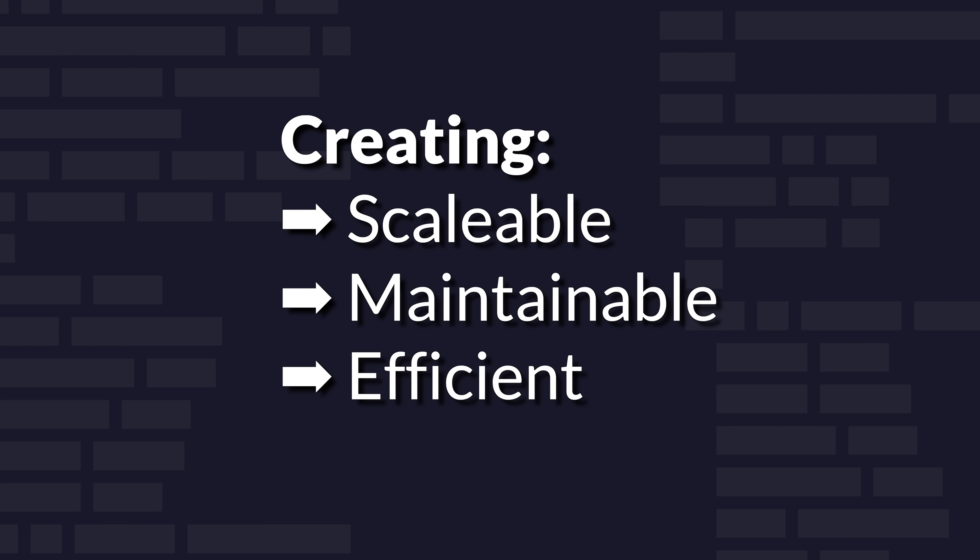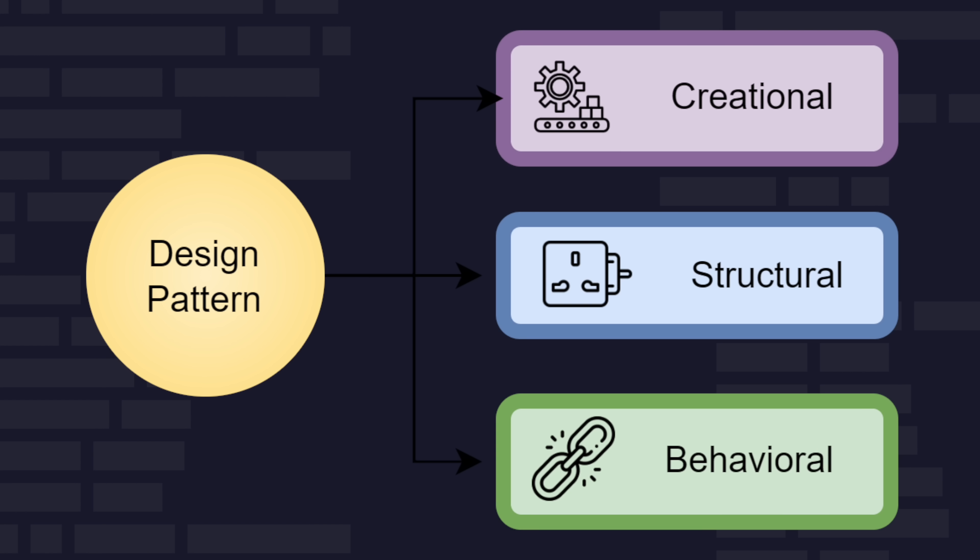Understanding software design and architecture is crucial for creating scalable, maintainable, and efficient back-end systems. This includes knowledge of design patterns, architectural styles, and principles that guide the structuring of software systems for better performance and scalability.